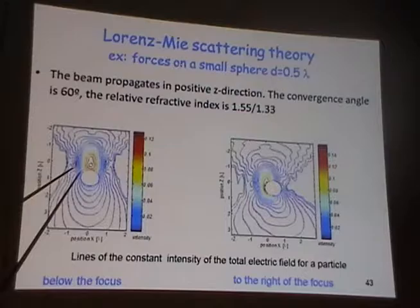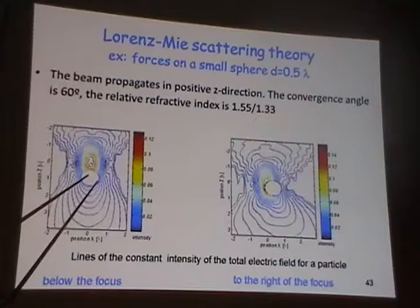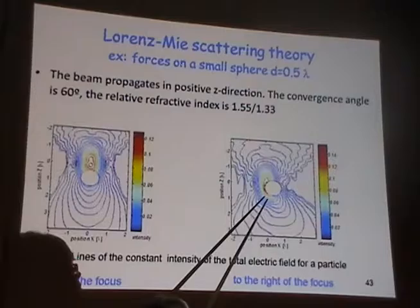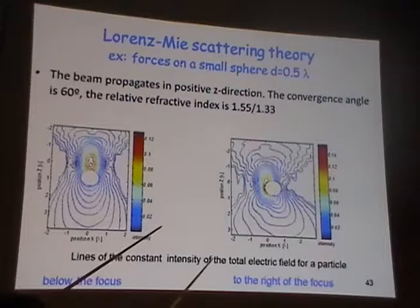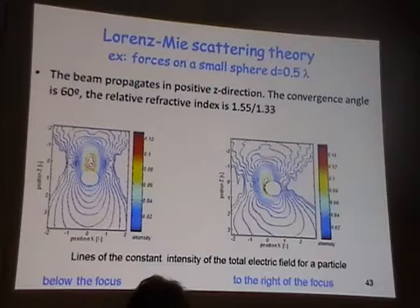We have two situations here. In the first, the particle sits a little bit below the focus of the light — this is how the field lines look. If the particle is offset from the focus, the bending of the light is very obvious, and by studying these field lines I can characterize my trap very well.